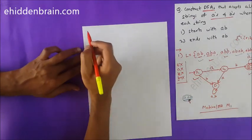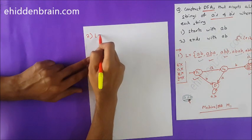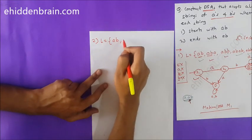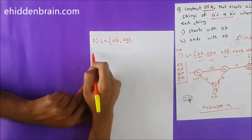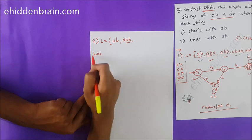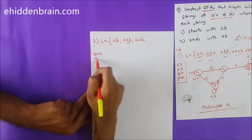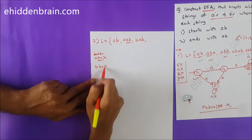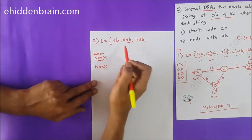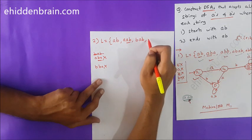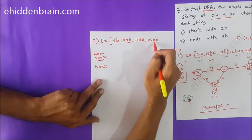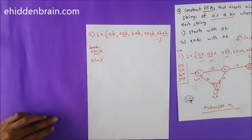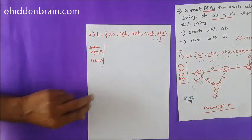Now the second question: strings that end with AB. Let's identify the language. The minimum length string is AB because it ends with AB. Then AAB is valid — it ends with AB. BAB is also valid. ABA is not valid because it ends with BA, not AB. BBA is also not valid. Then AAAB, ABAB are valid. We'll take five to six strings as our hint and draw the DFA.